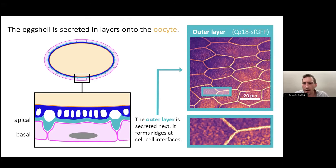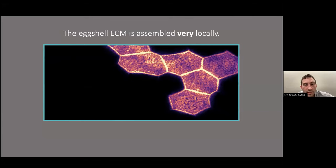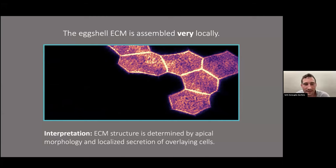With these tools in hand, we can start asking questions. One thing we can do is figure out where the ECM proteins are coming from. Here's an arrangement of cells from this epithelium. A subset of them are going to secrete a labeled version of the outer protein, and the rest won't. Just some of the cells are secreting labeled protein, the rest are secreting unlabeled protein. This is all wild type, but the protein was only secreted by these ones that are highlighted. The cells are not visible, but just from the ECM, we can learn things about how the secretion and movement of this protein works. What we can see is that it's actually secreted very locally and assembled very locally at a subcellular scale, which we interpret to mean that the ECM structure is determined by the apical morphology and localized secretion of those overlying cells.